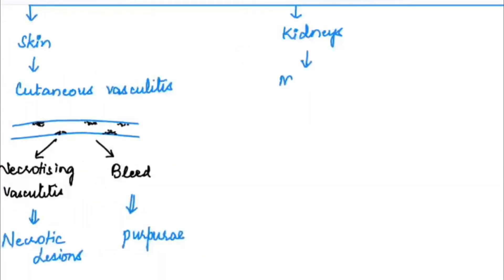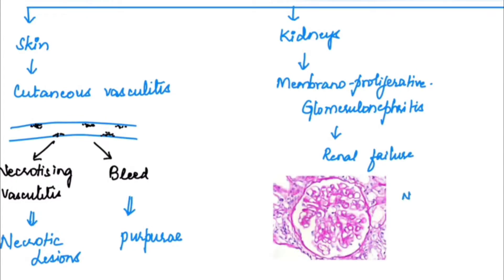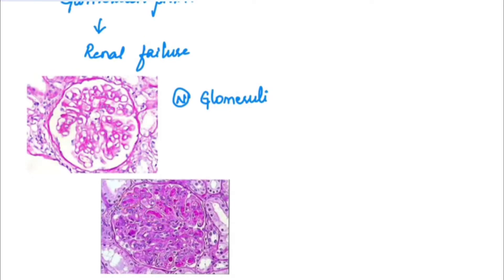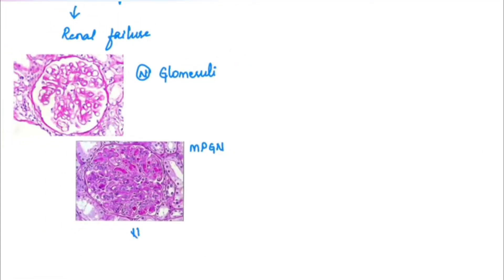When the kidneys are involved, it leads to membranoproliferative glomerulonephritis (MPGN) due to immune complex deposition in the glomerulus, which can then lead to renal failure. This is the histological picture of a normal glomerulus. In membranoproliferative glomerulonephritis, you can see immune complex deposition inside the glomeruli. Progression to MPGN indicates a poor prognosis.